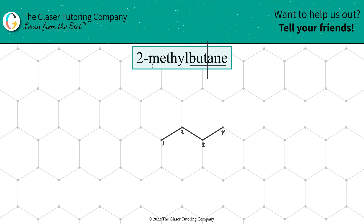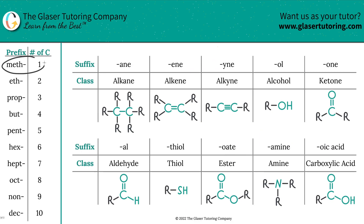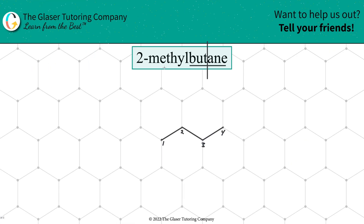Now moving on to the next part, we have this two-methyl piece. I know that's a substituent because of the "yl" ending. And not only is it a substituent, but the "meth" tells me how many carbons there are. According to this table, the prefix "meth" represents one carbon. So this is telling me that I have a one-carbon substituent, and the two tells me the location on the parent. The numbers in this formula will always tell you the location on the parent. So go to carbon number two on the parent and add one carbon on it — go straight up, connect the dots, and go to the next dot.